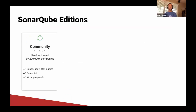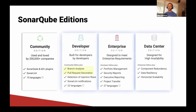We have four editions to fit every use case, starting with Community Edition. Community Edition is free and open source, used by thousands of companies and organizations, and it supports 15 languages. Branch analysis and the PR decoration feature we've been looking at today starts with Developer Edition. We also have Enterprise and Data Center editions for more advanced use cases.